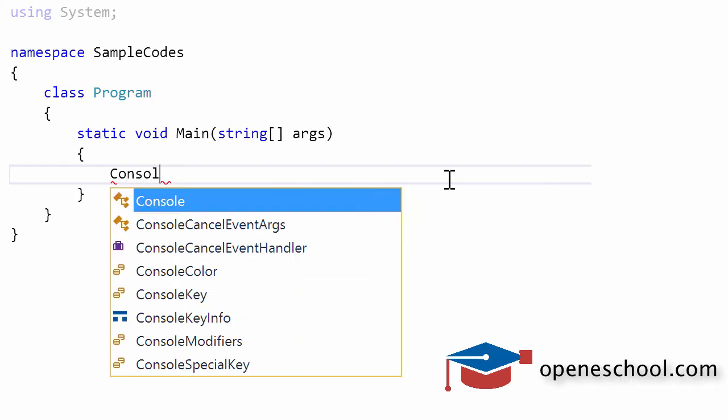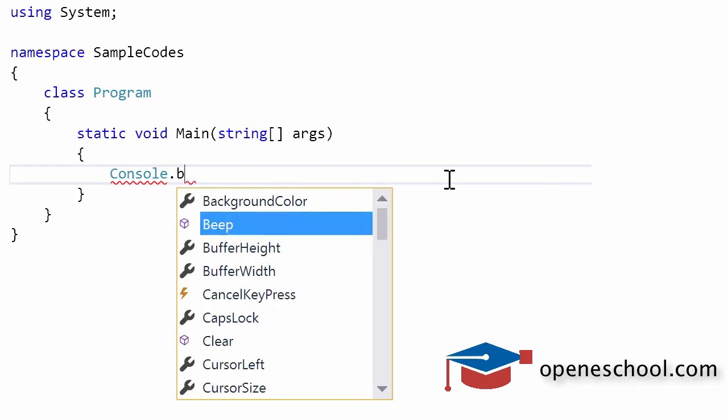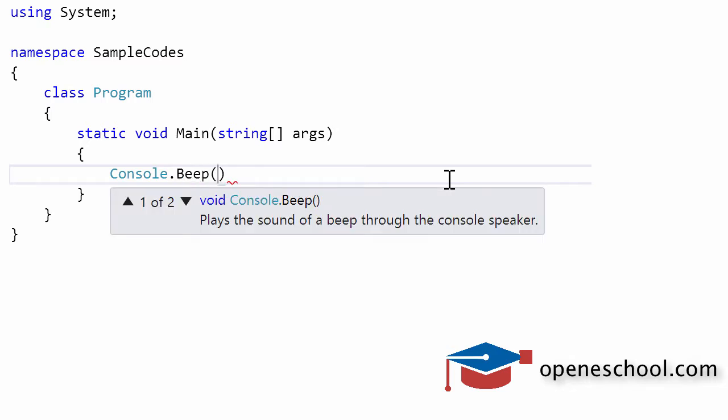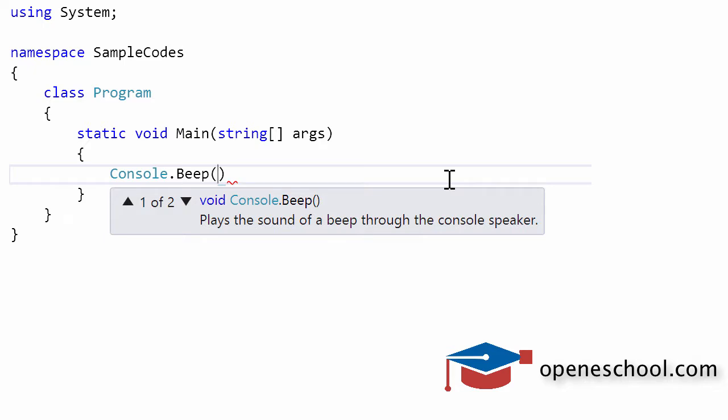The Console class gives you a function by the name Beep. This function actually has two overloads. The second overload will ask you to enter the frequency of the sound that you want to generate, and it will ask you the duration for which you want to generate that sound. It also tells you in the help section that the frequency of the beep should range from 37 hertz to 32,767 hertz.